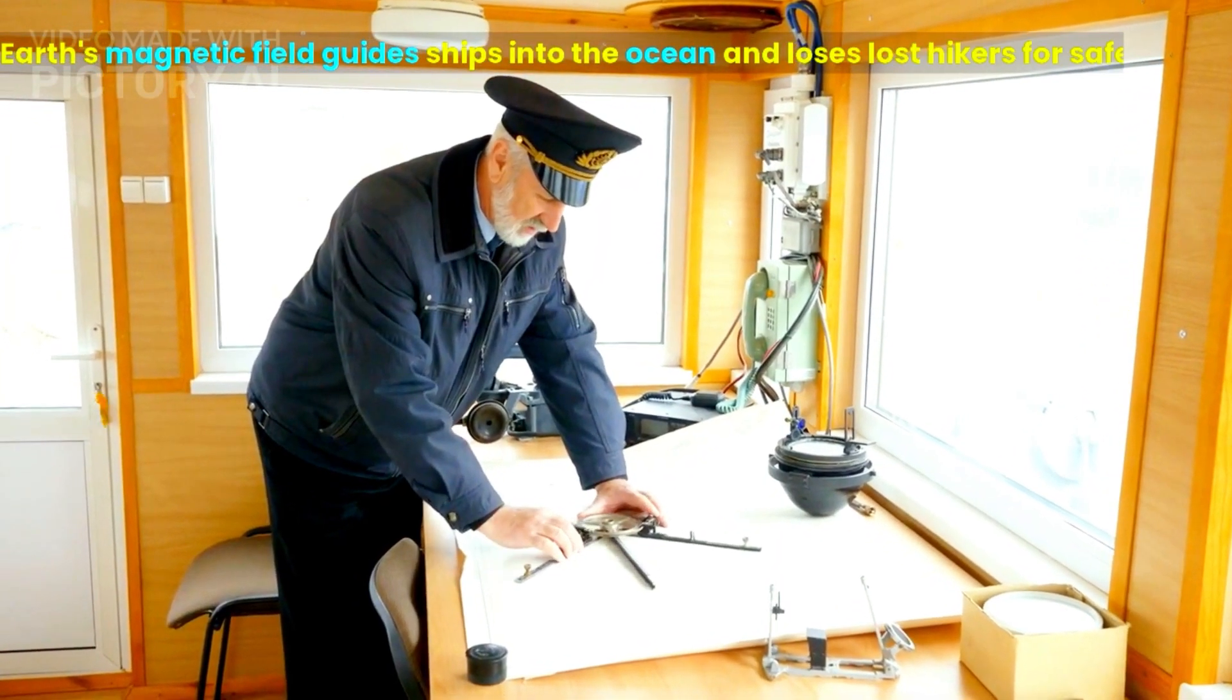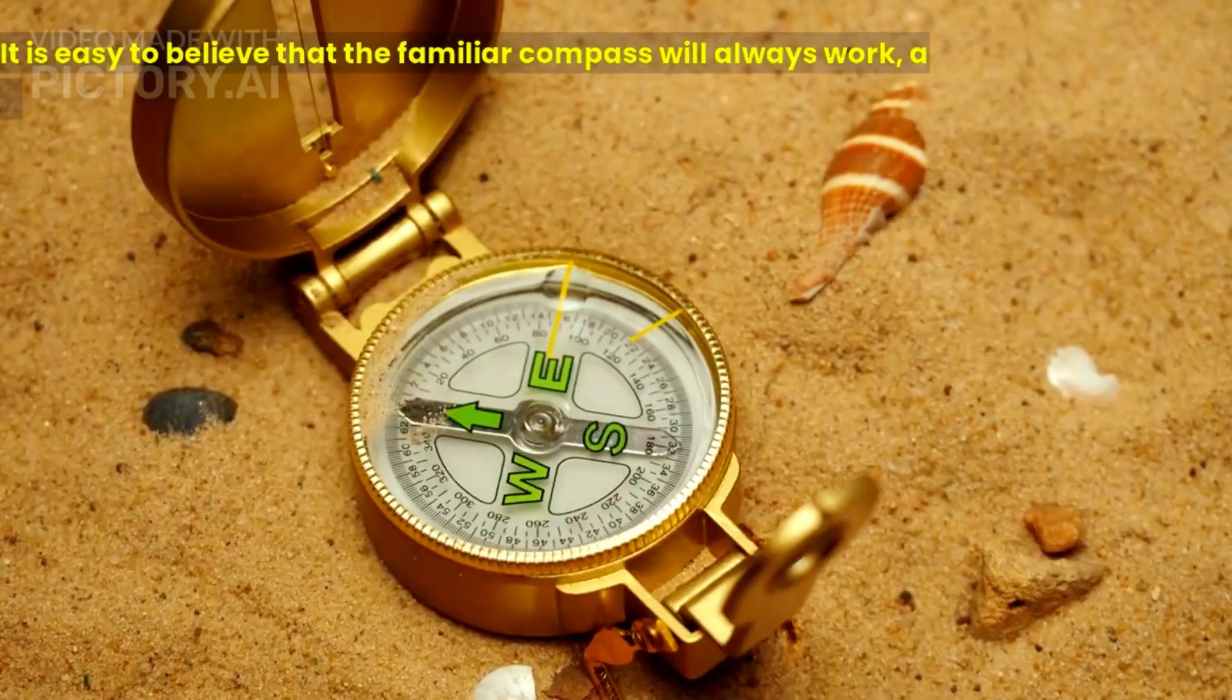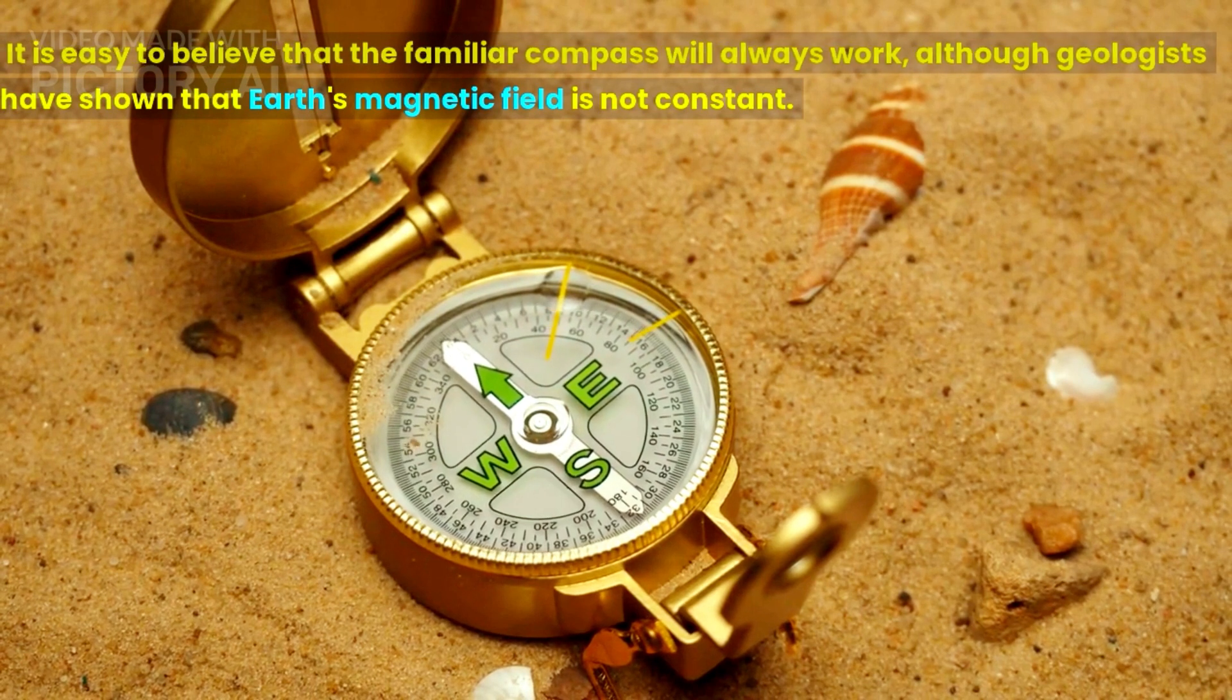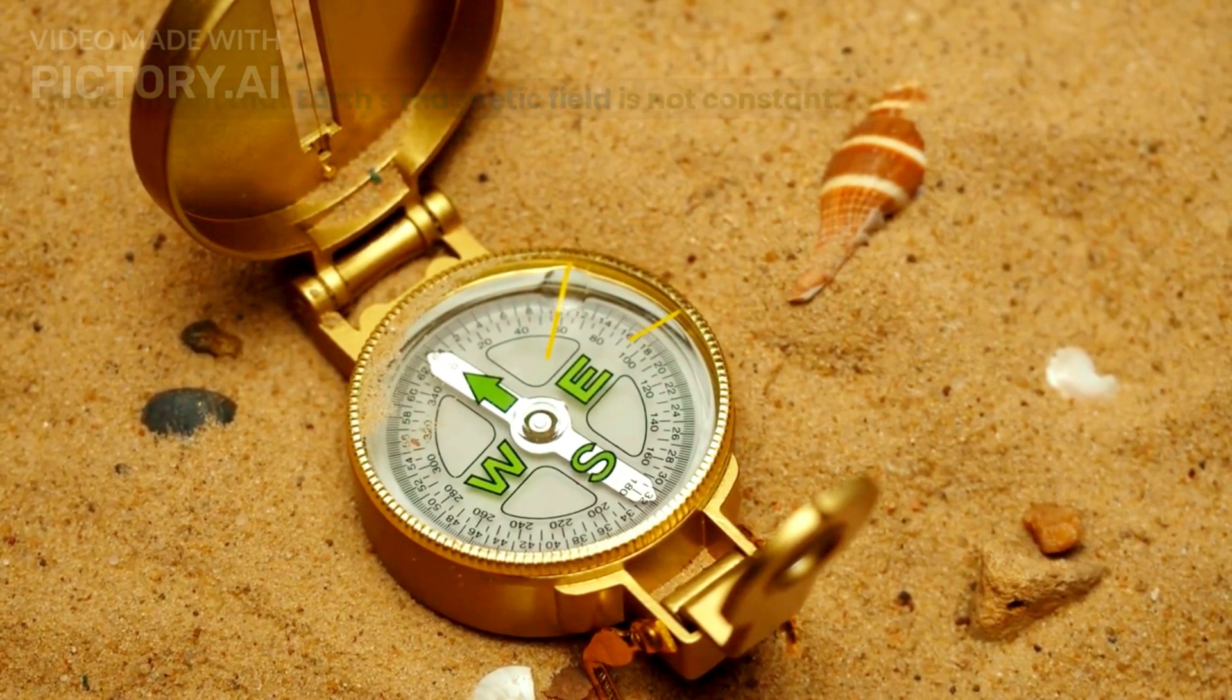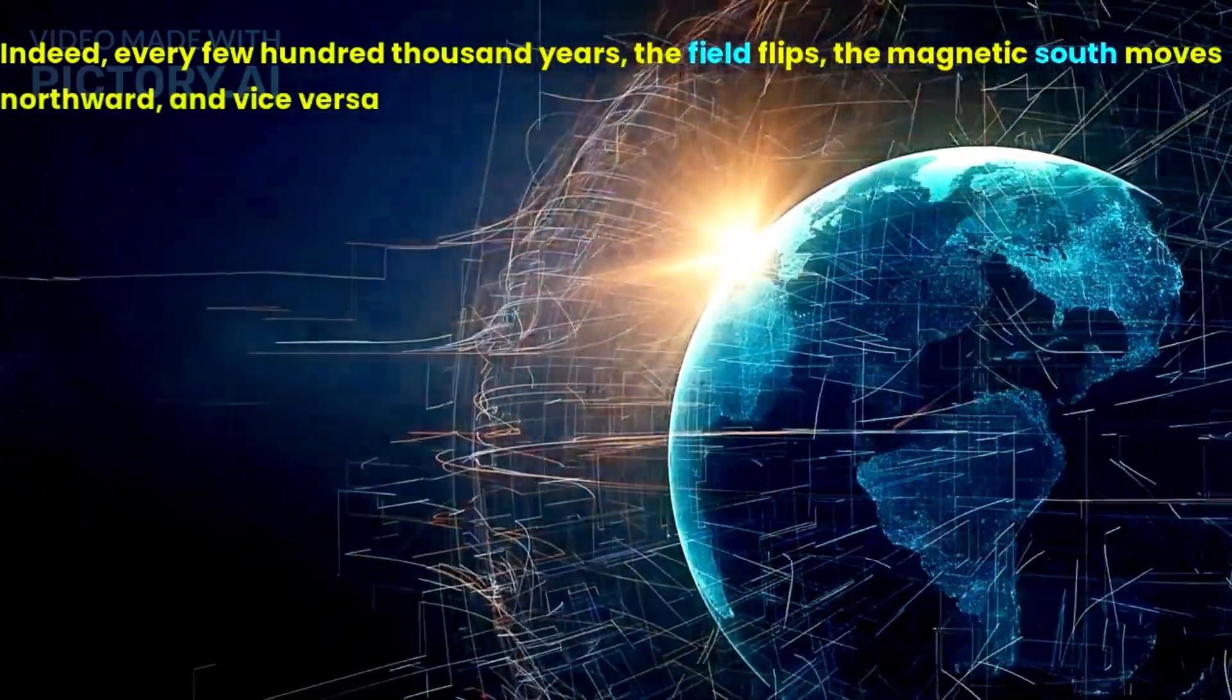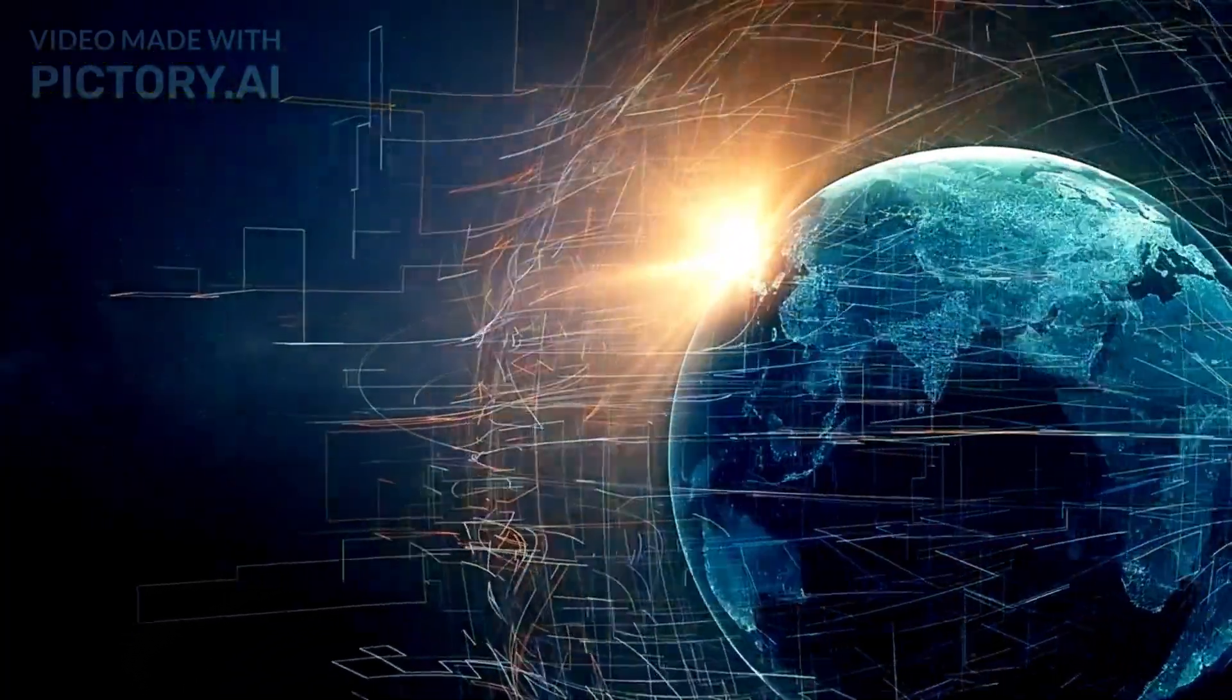Earth's magnetic field guides ships into the ocean and loses lost hikers for safety. It is easy to believe that the familiar compass will always work, although geologists have shown that Earth's magnetic field is not constant. Indeed, every few hundred thousand years, the field flips, the magnetic south moves northward, and vice versa.